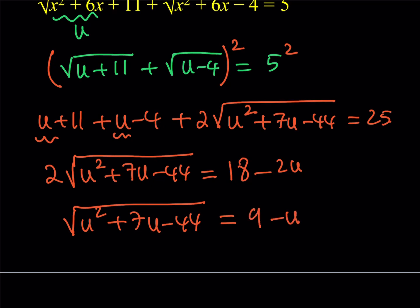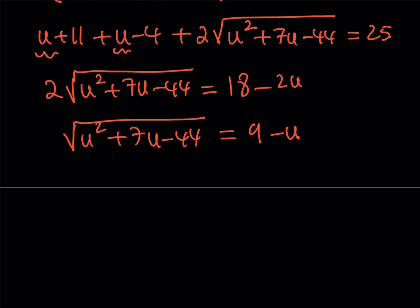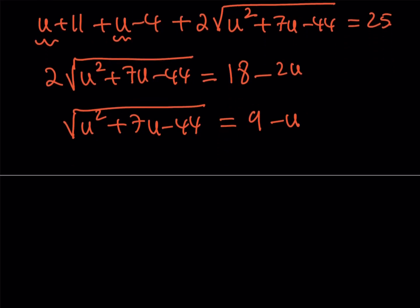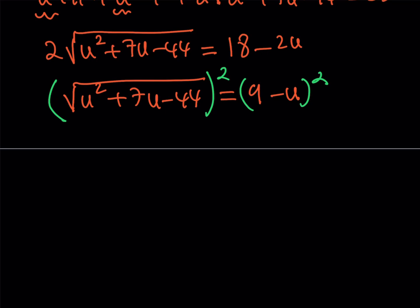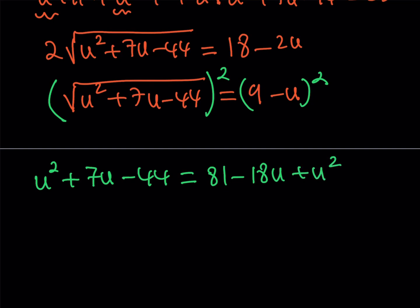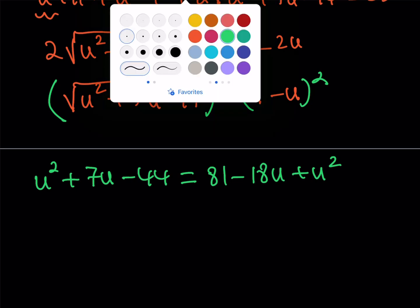There's something nice about this: when you square both sides a second time, something good happens. Let's square both sides one more time. Note that squaring twice may introduce extraneous roots, so we'll need to check our work. Squaring gives us u squared plus 7u minus 44 on the left, and 81 minus 18u plus u squared on the right. The u squared terms cancel out, and we end up with a linear equation — not a quadratic, which is easy to solve.